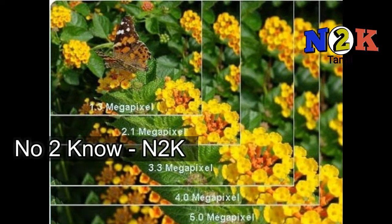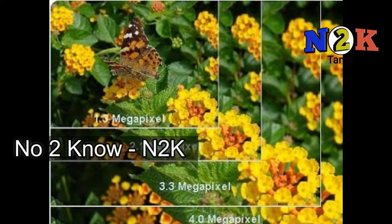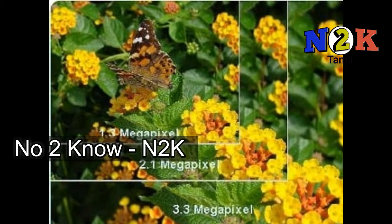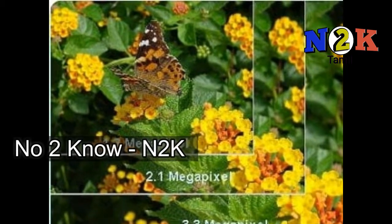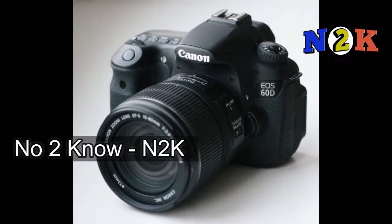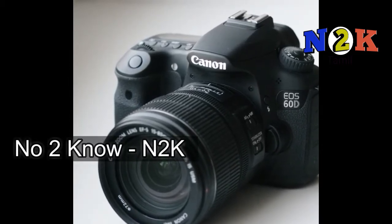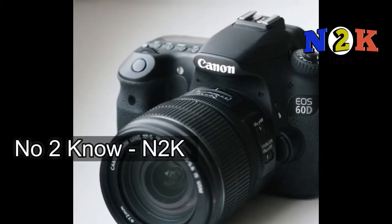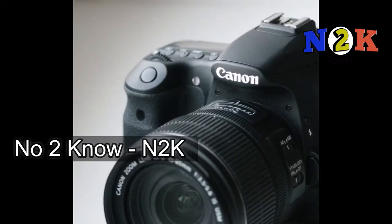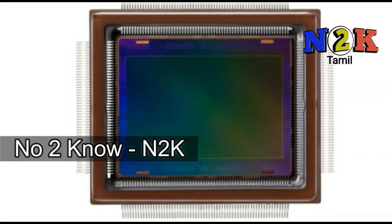It is a megapixel, so if we take a photo we can see how the camera is. If we look at the megapixel, we will see how the camera is updated. We will see the video in this video. This camera is a DLXR camera. We will see the quality of our phone, the 3 types of camera. The camera is a main.